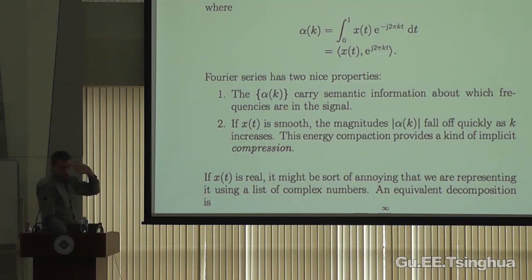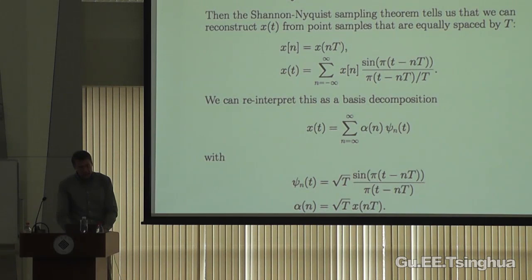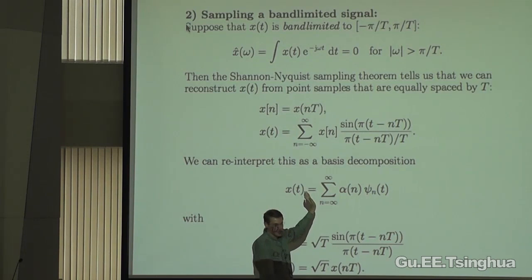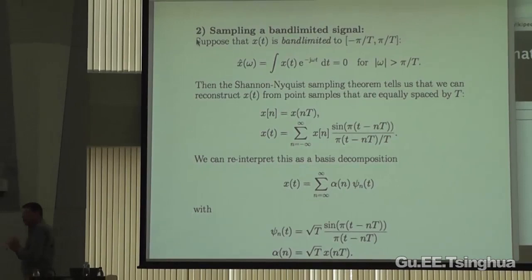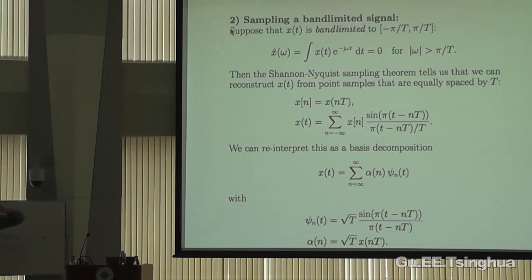Here's a second example you can understand nicely without ever talking about a basis — the sampling theorem in signal processing. I can recast the Shannon–Nyquist sampling theorem as a basis expansion for band-limited signals on the real line.